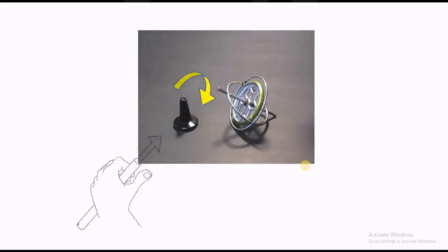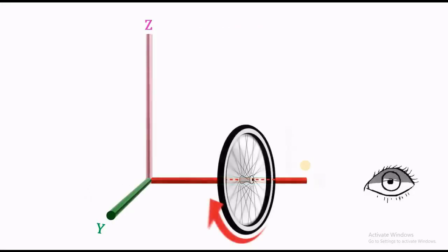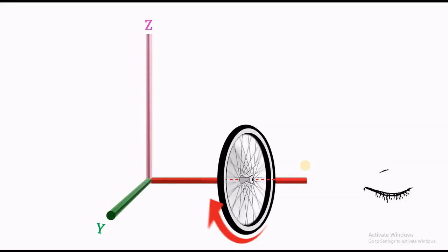Now, let's combine these two simple problems into the third problem. For that, let's have an XYZ three-dimensional coordinate system. A disk is rotating in clockwise direction about the x-axis, looking from the direction shown.